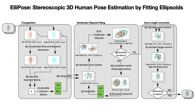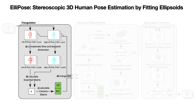Our algorithm consists of three stages: the triangulation, the multiscale ellipsoid fitting, and the bone length correction. The first stage uses epipolar geometry to simultaneously triangulate the poses and estimate the camera positions.